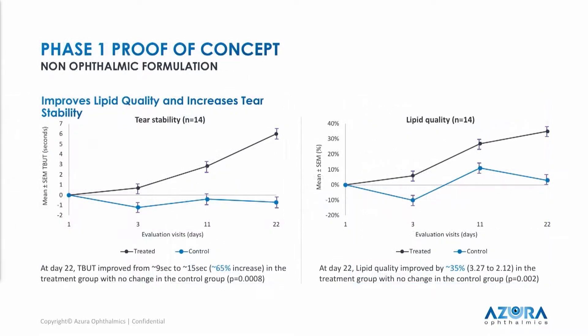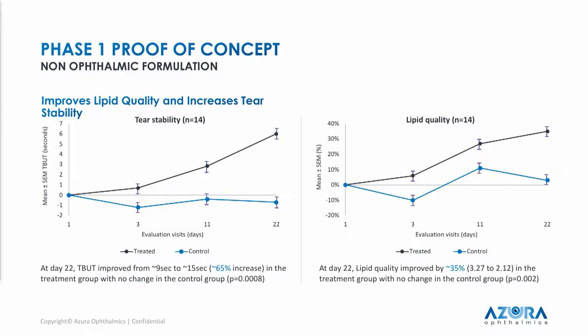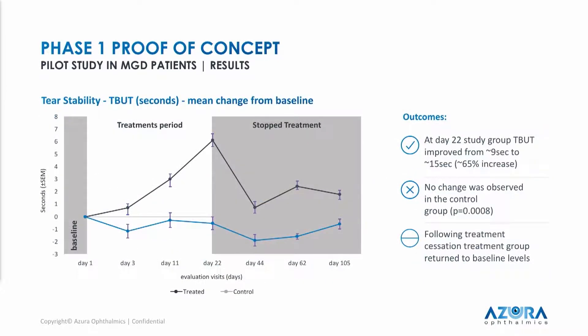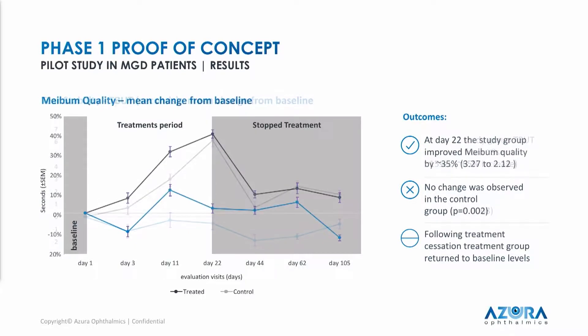We saw a 6.5-second improvement in tear break-up time in 22 days of biweekly dosing, as well as a corresponding improvement in lipid quality. When we stopped the treatment, we saw that these positive outcomes went back to baseline for both tear break-up time and lipid quality. That validated our understanding of this condition as a dermatological disease.